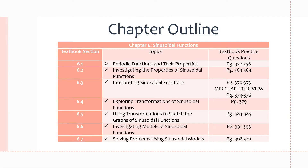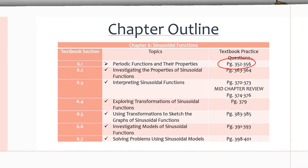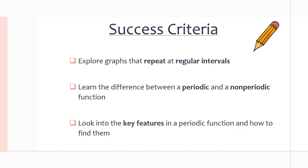Here's the chapter outline for chapter 6. We are starting off with section 6.1, and you can find extra practice questions on this topic on pages 352 to 356. The success criteria for this lesson are: exploring graphs that repeat at regular intervals, learning the difference between a periodic and a non-periodic function, and looking at the key features and properties of periodic functions and how to find them.